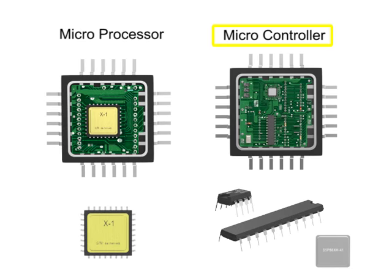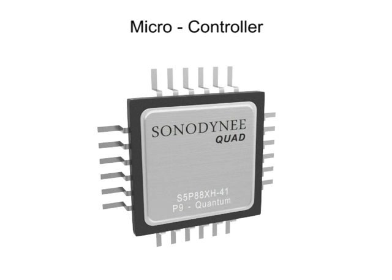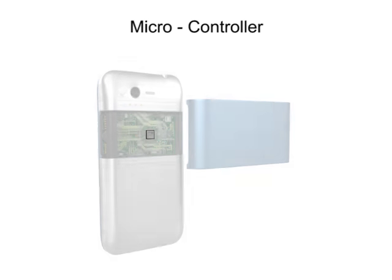In general, microprocessors are used to perform a wide range of computing operations, while a microcontroller, with its all-in-one design, performs specialized tasks required for devices such as a smartphone.